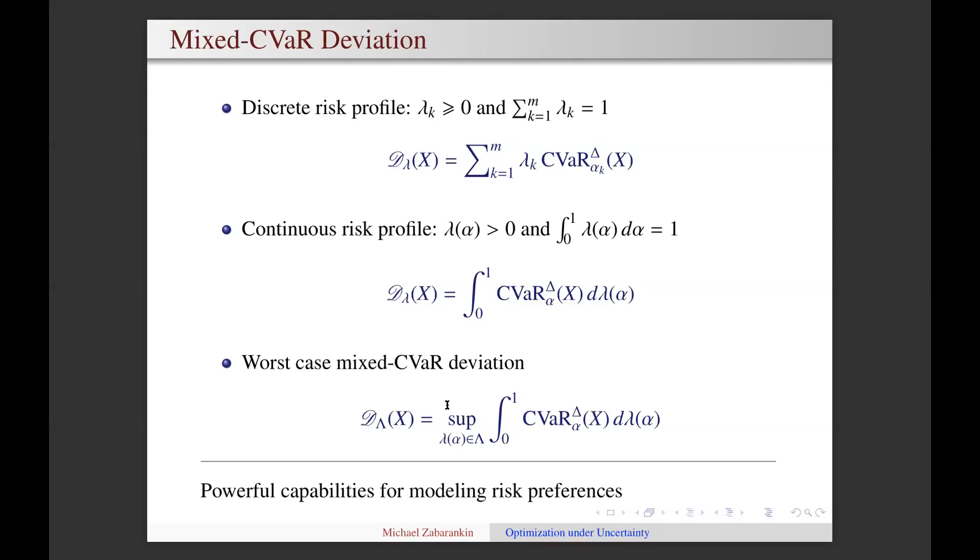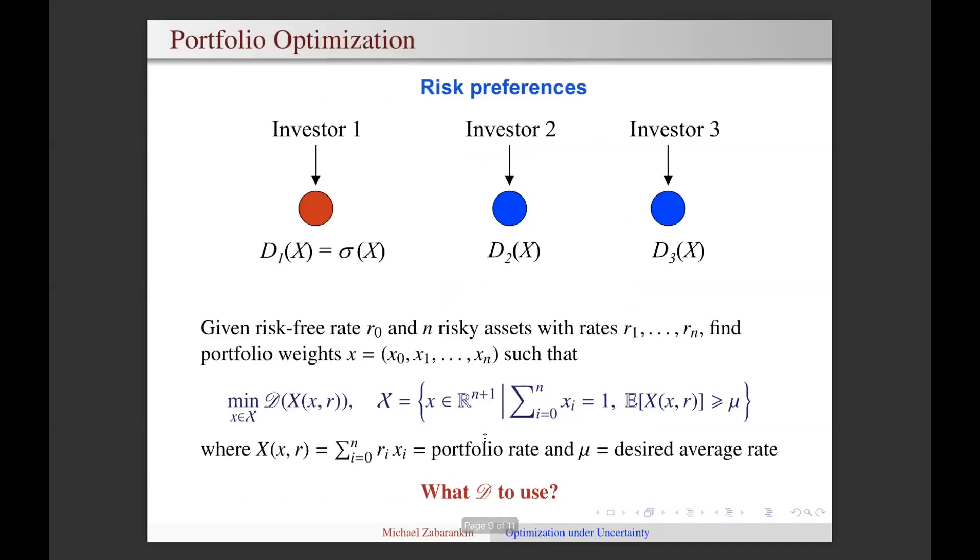Yet another level of sophistication is to consider some collection capital Lambda of possible continuous risk profiles and to define a deviation measure as the worst case of mixed CVaR deviations over that collection of profiles. The above three deviation measures provide powerful capabilities for modeling individuals' risk preferences. This is one of the main reasons for introducing general deviation measures. Now, let's discuss portfolio optimization.